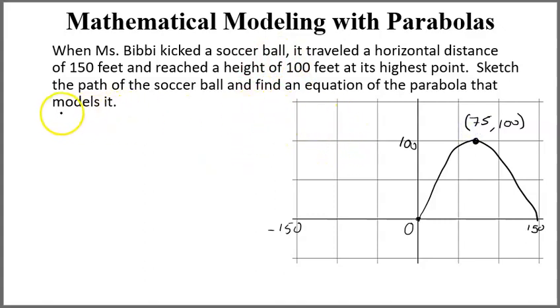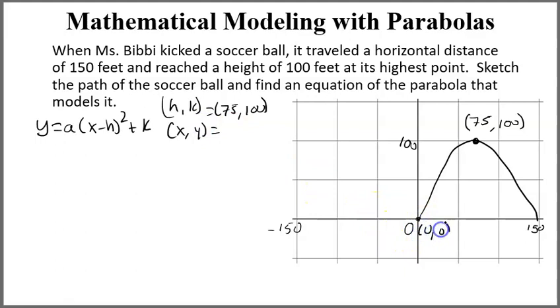I'm going to find the, because I have a vertex and a point, I can actually find the equation in vertex form or graphing form. Here's the thing. The vertex is HK, so my HK point is the point 75, 100. And then XY is any point on the graph. So I'm going to use this point. This point is the point 0, 0. I could use 150, 0, but 0, 0 is easier. And the only thing I don't know is A. To write an equation in graphing form, I have to know A and H and K. So I have H and K. So I can use HK with X and Y to solve for A.